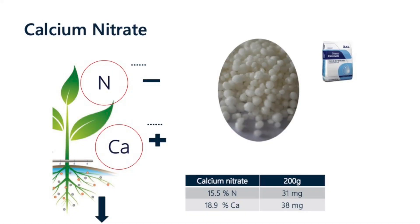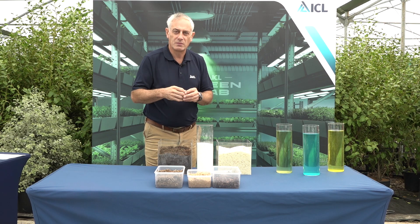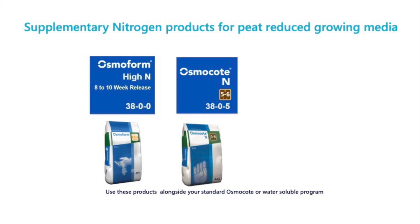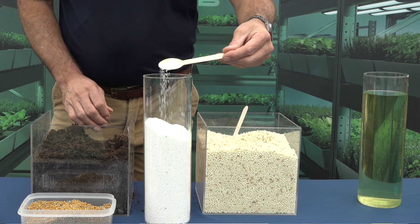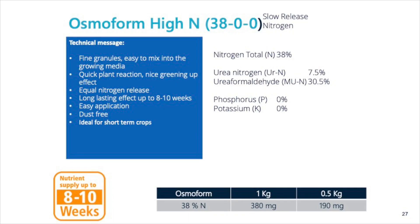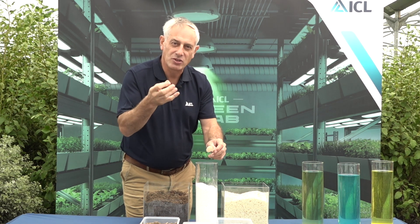Traditionally, people have used calcium nitrate — a readily available and cheap form of nitrogen — but it's wholly nitrate nitrogen, readily dissolvable and easily leached from the growing media. At ICL, we've been working hard to develop more technical solutions. After extensive trials and evaluation, ICL have introduced two nitrogen products. We have Osmoform High N, a 38% nitrogen slow-release product releasing over eight to ten weeks. This is great for shorter-term crops — it supplements your standard nutrition package with nitrogen that releases a little every week, topping up nitrogen lost from leaching and possibly assimilation by bark or wood fibre.